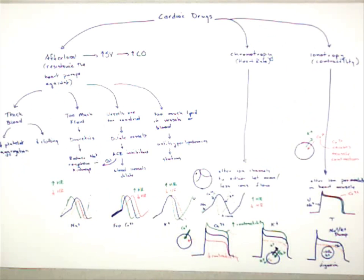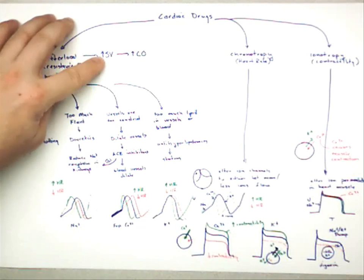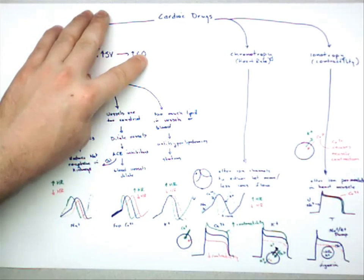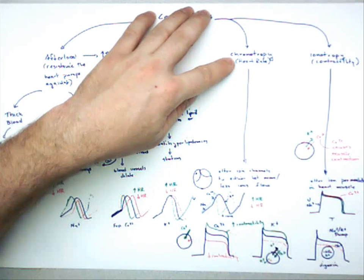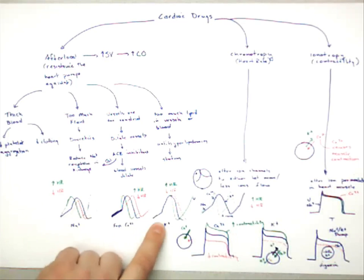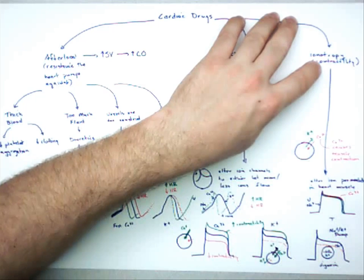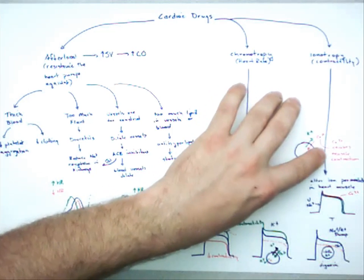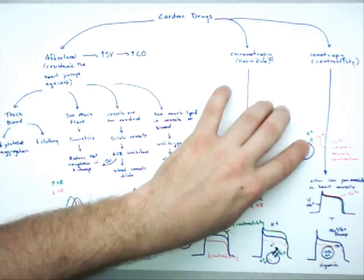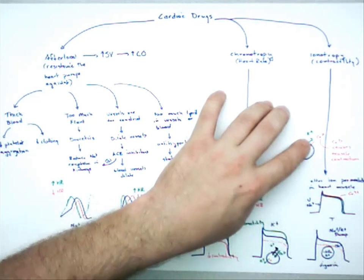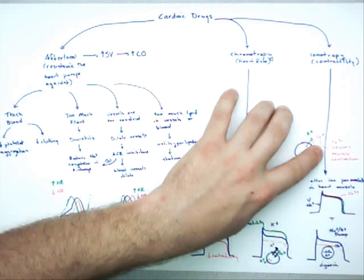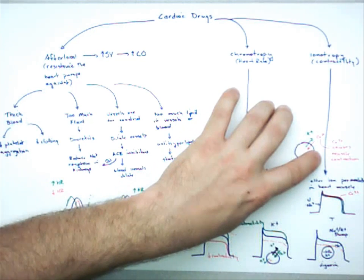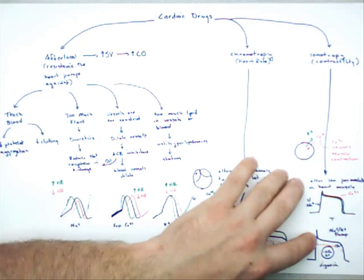Quick wrap-up: cardiac drugs work in one of three ways. First, they decrease afterload — make blood thinner or open up blood vessels — making it easier for the heart to pump more blood, increasing cardiac output. Second, pharmaceuticals can affect heart rate by acting on sodium channels, calcium channels, or potassium channels. Third, pharmaceuticals can affect contractility: calcium causes muscle contraction, so you increase or decrease calcium; since calcium is balanced by potassium, altering potassium permeability also alters calcium and therefore contractility. You can stimulate potassium to stimulate calcium and contractility, or inhibit potassium to inhibit calcium and contractility.